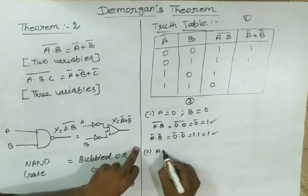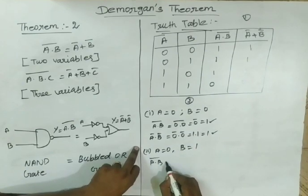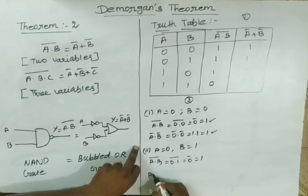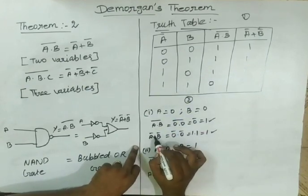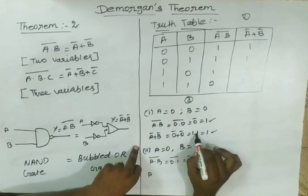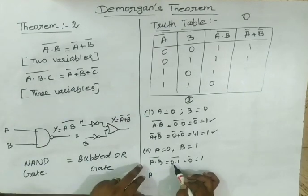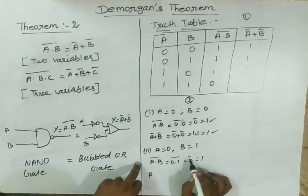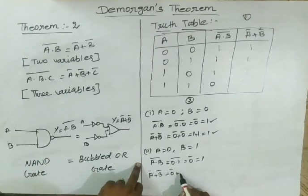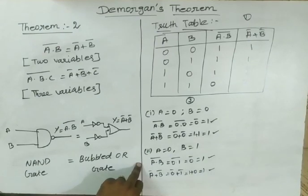Second case: A=0, B=1. Left hand side: A dot B whole bar = 0 dot 1 whole bar = 0 bar = 1. Right hand side: A bar plus B bar = 0 bar plus 1 bar = 1 plus 0 = 1. Verified. Third case: A=1, B=0. Left hand side: 1 dot 0 whole bar = 0 bar = 1. Right hand side: A bar plus B bar = 1 bar plus 0 bar = 0 plus 1 = 1. Verified.